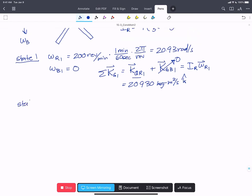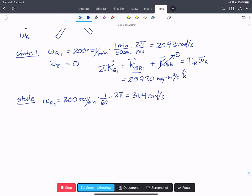At state two, now the omega of the rotor has gone up to 300 rpm. And that's going to be times one over 60 times two pi, 31.4 rads per second. Again, in the positive direction. So it's just increased the speed in the same direction.